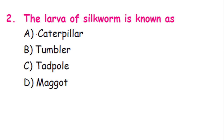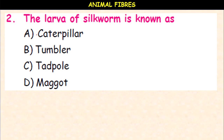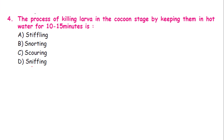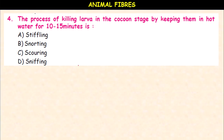The larva of the silkworm is known as caterpillar, tumbler, tadpole, or maggot? It is caterpillar. The silk fiber is made of only fibroin, only sericin, both A and B, or only casein? Casein is actually milk protein, so the answer is both fibroin and sericin. The process of killing larvae in the cocoon stage by keeping them in hot water for 10 to 15 minutes is called stifling, snorting, scouring, or sniffing? It is stifling — very important, don't get confused between the terms.